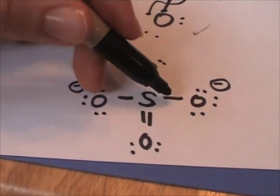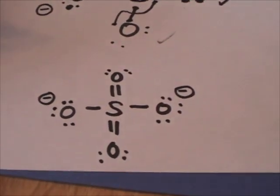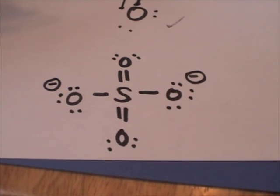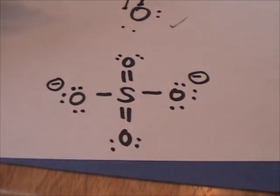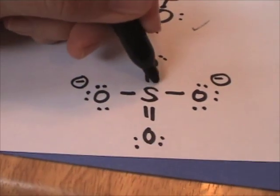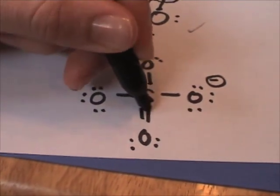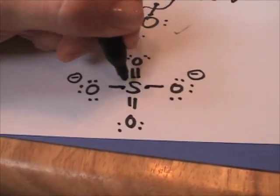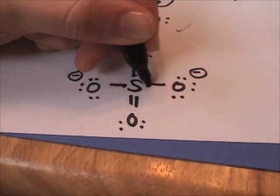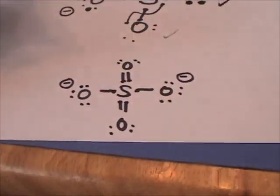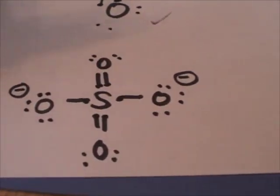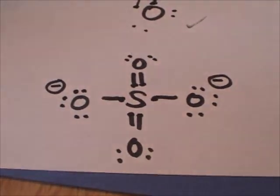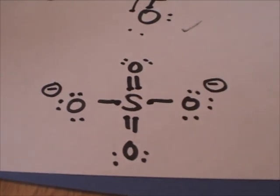And again, this sulfur has 2, 4, 6, 8, 10, 12 valence electrons, but that's okay. It's got 1, 2, 3, 4, 5, 6 valence electrons where they're still there. We didn't have to add or subtract or anything to these original electrons. So it's got a formal charge of zero — everything's good.